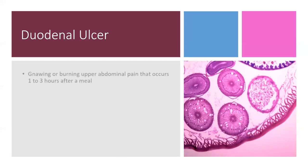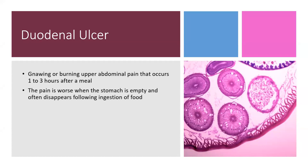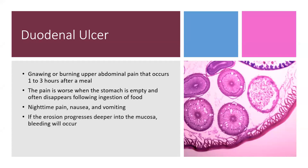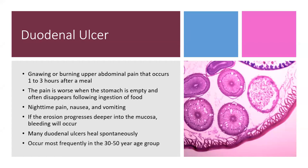Duodenal ulcers cause a gnawing or burning upper abdominal pain that occurs one to three hours after a meal. The pain is worse when the stomach is empty and often disappears following ingestion of food. Nighttime pain, nausea, and vomiting may occur. If the erosion progresses deeper into the mucosa, bleeding will occur. Many duodenal ulcers heal spontaneously and occur most frequently between the ages of 30 to 50 years.